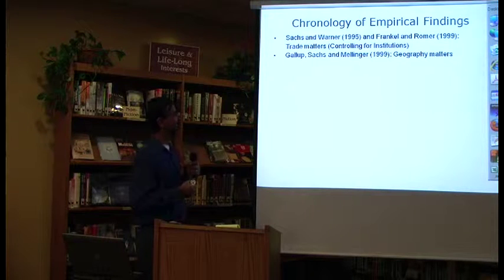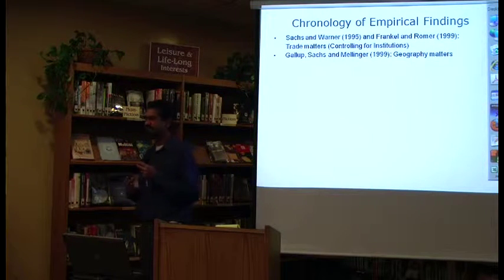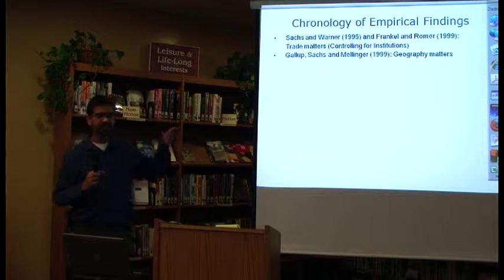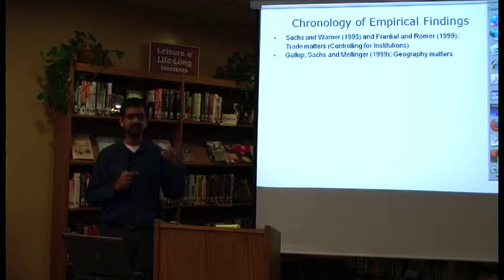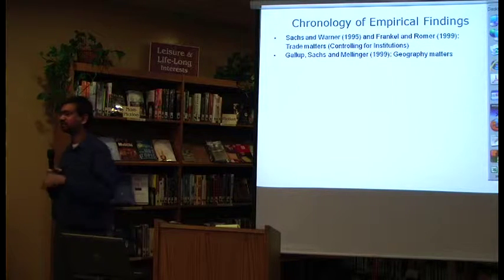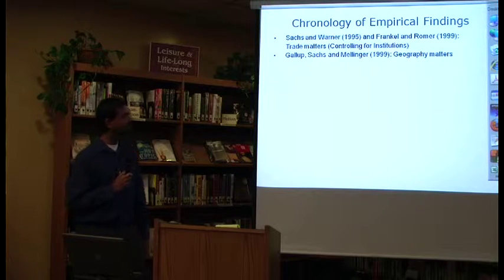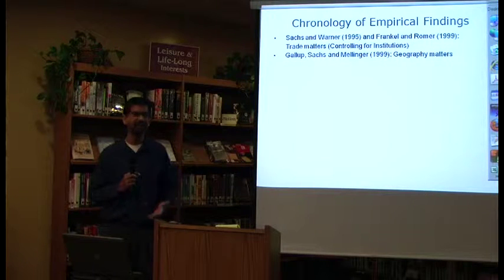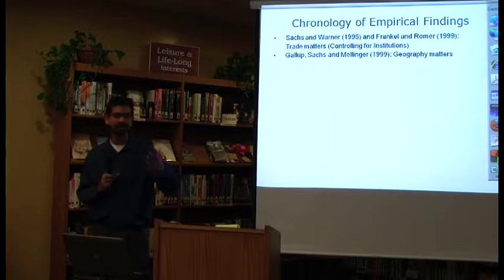Then Sachs, Gallup, and Malengna came up with another paper in which they look at geography. They say that you can have trade and good institutions, but you are destined by the geography that you have — that is the most underlying factor for development. Their hypothesis is that if you have bad geography, you can't really grow; you are just stuck in this poverty trap.